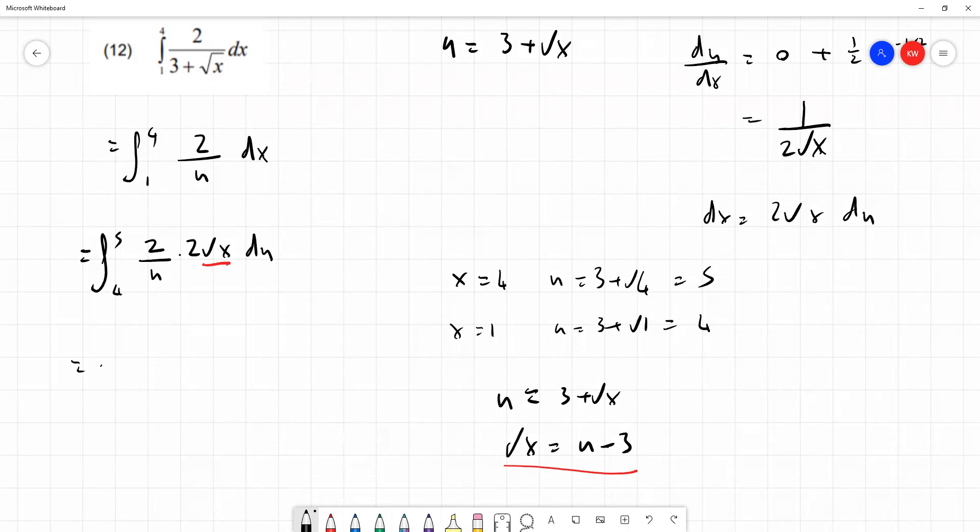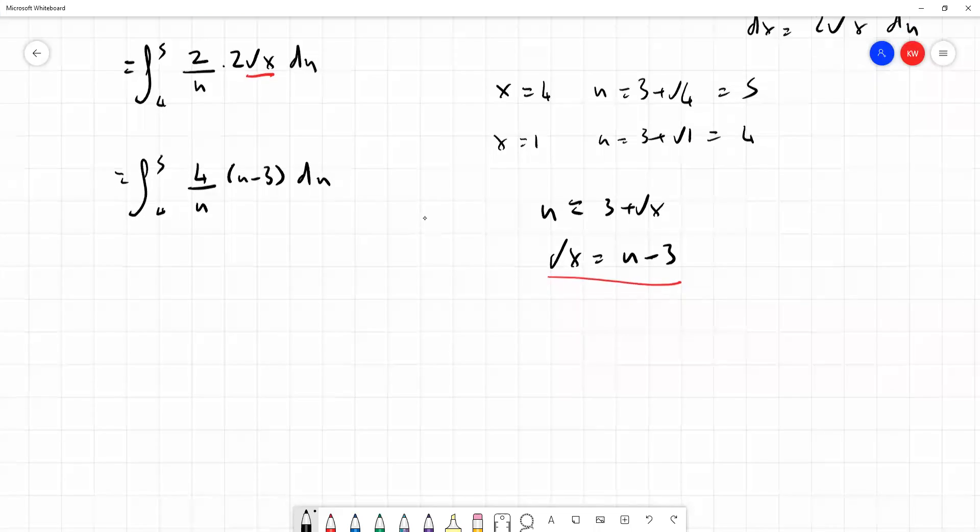So we're going to have integral from 5 to 4. The 2 stays, we've got 2 times 2 here, so that's going to be 4 over u. But the root x we're going to replace with u minus 3, u minus 3, like so, du. And we're very close to something we're quite happy to integrate.